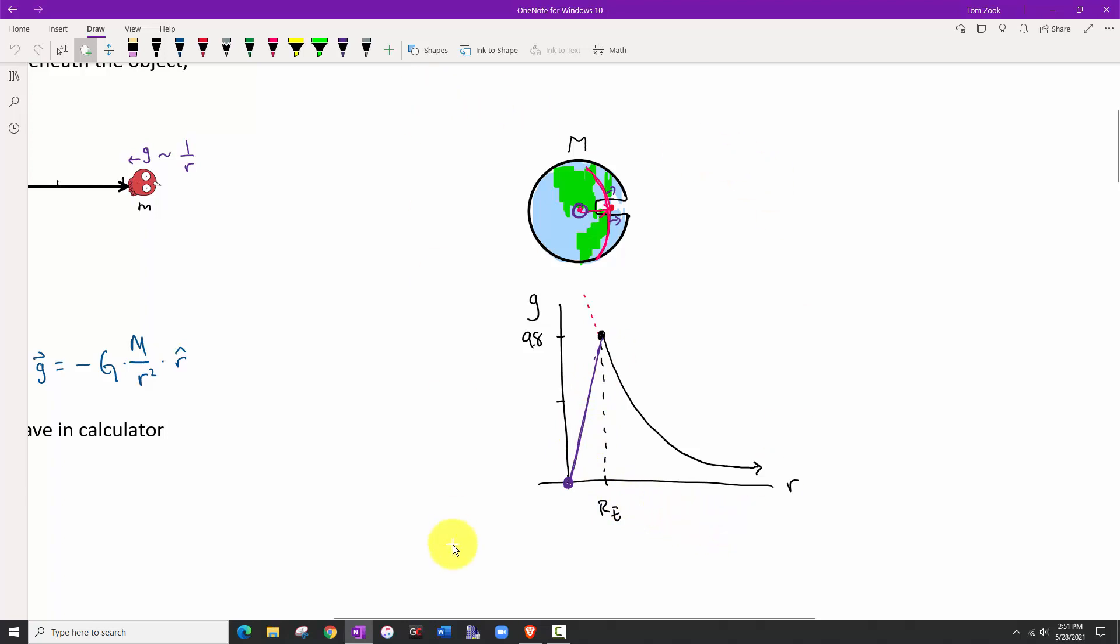Now we're going to go ahead and pause this video series here. We'll go on to part two and talk about the gravitational potential energy and how it changes when we're dealing with astronomical scales. See you then.